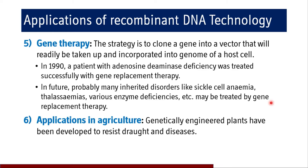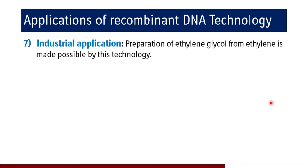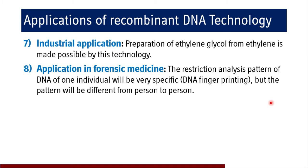Recombinant DNA technology has applications in horticulture and agriculture as well. Genetically engineered plants have been developed to resist drought and diseases and to yield better agricultural products like fruits, grains, and pulses. There are also industrial applications — for example, the preparation of ethylene glycol from ethylene is made possible by recombinant DNA technology.